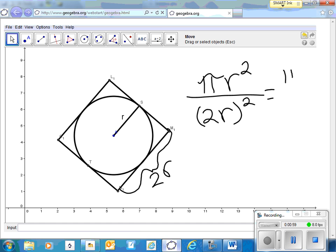So that's pi R squared over four R squared. R squared divided by R squared is one.